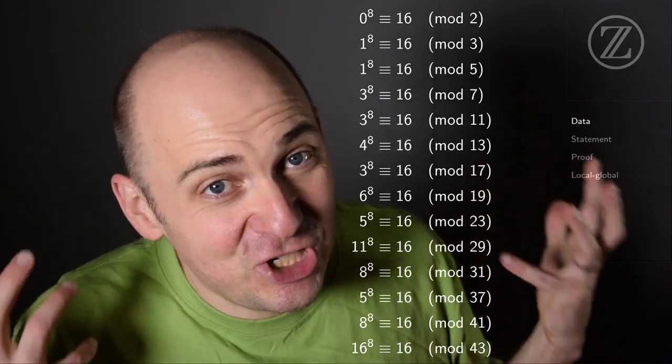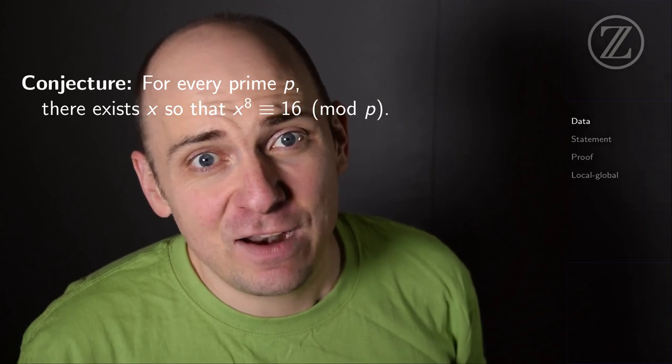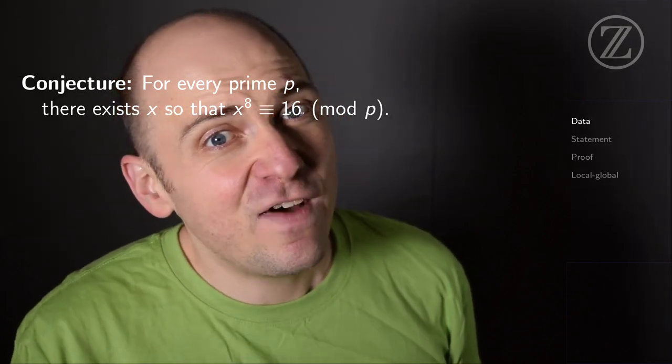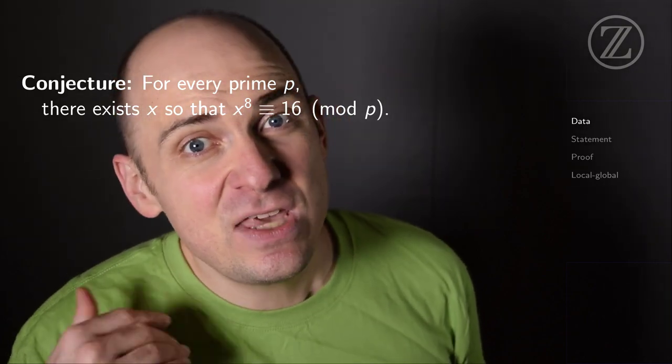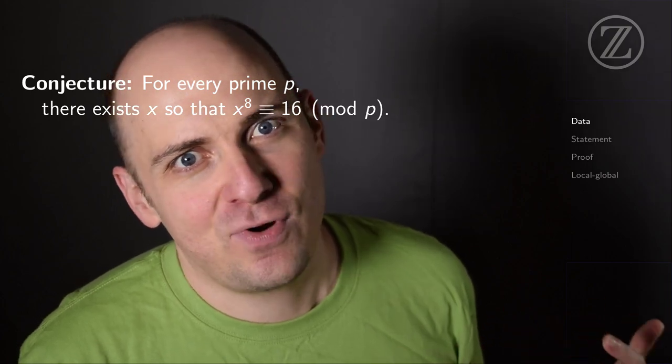The conjecture that all of this data suggests is that for every prime p, we can find an x so that x to the 8th is congruent to 16 modulo that prime p.